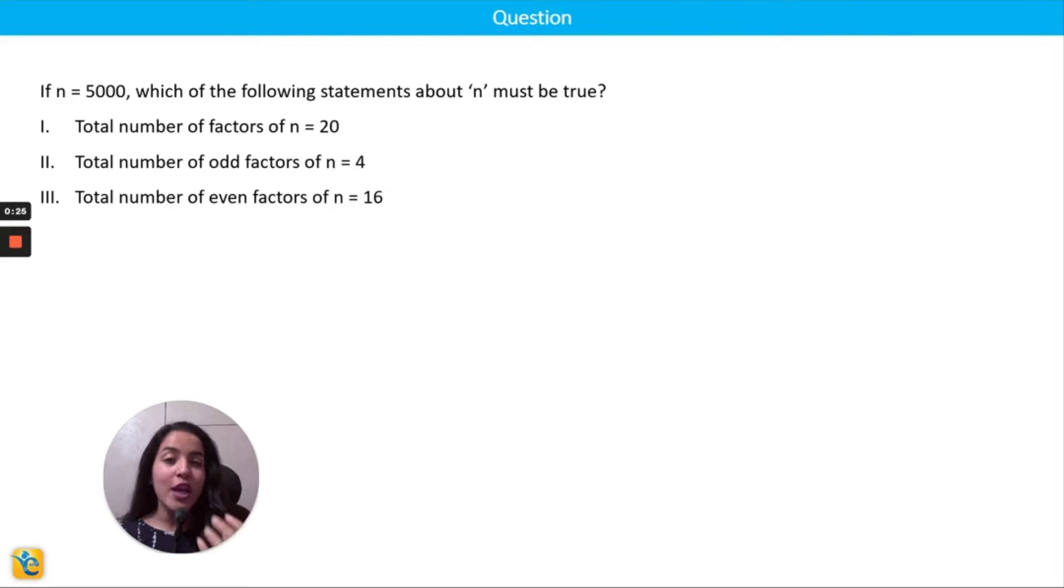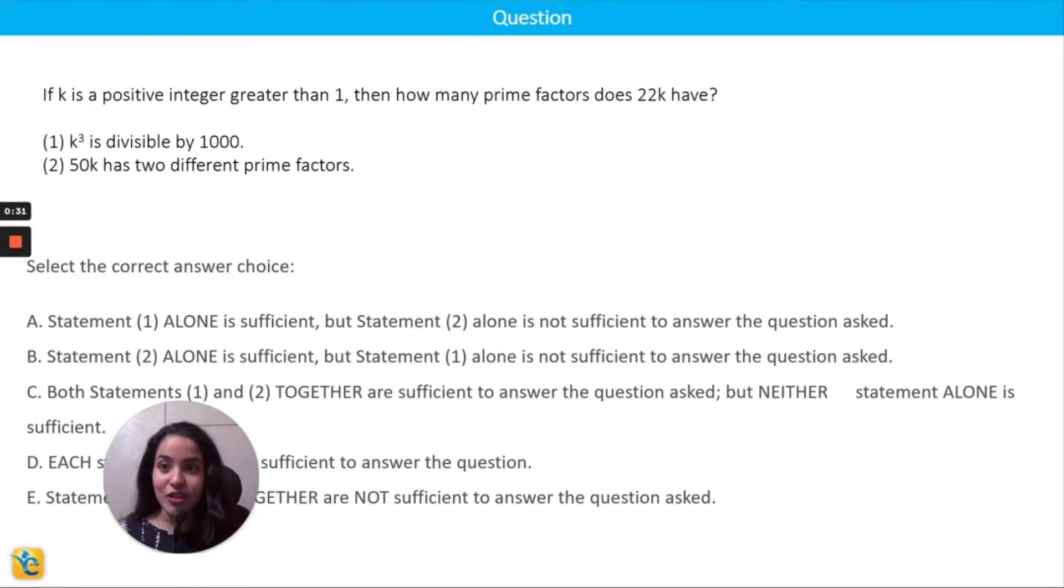Put your thinking caps on and think about this. Next question is a slightly harder one. It's a data sufficiency question where you are given that k is a positive integer greater than one, and you want to find out the number of prime factors of 22k. What we have in the statements is some information about k. You have to analyze everything critically and take out as much as you can from each statement in your goal to finding the number of prime factors of 22k. As I said, the solutions to these will be up soon. Meanwhile, don't forget to comment your answers. Post your answers in the comments below before I submit mine. Make sure to subscribe to the channel for more great content like this. Happy learning!